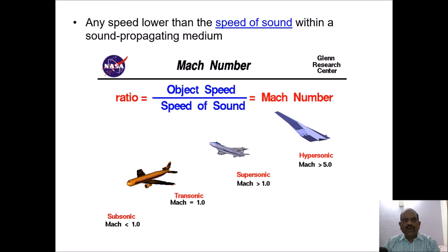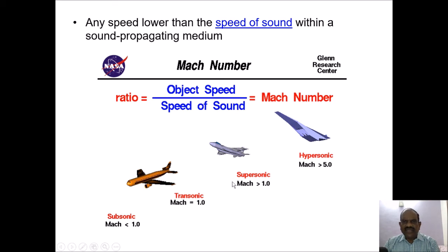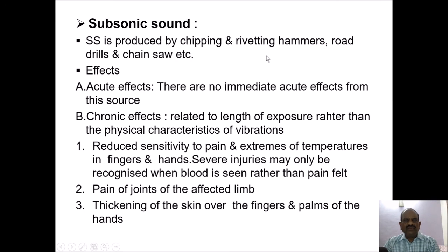Subsonic refers to any speed lower than the speed of sound within a sound-propagating medium. The Mach number is the ratio of object speed to the speed of sound. Hypersonic means speed greater than Mach 5; supersonic means speed greater than Mach 1; transonic means Mach equals 1; and subsonic means Mach speed less than 1. Subsonic sound is produced by chipping, riveting hammers, road drills, chainsaws, etc.